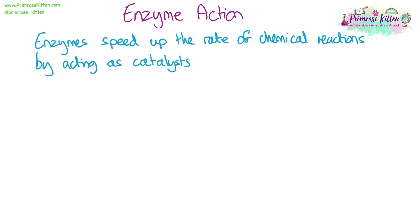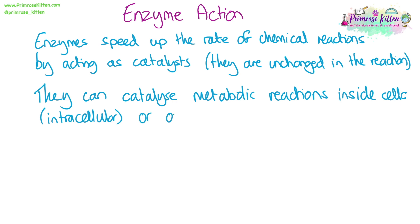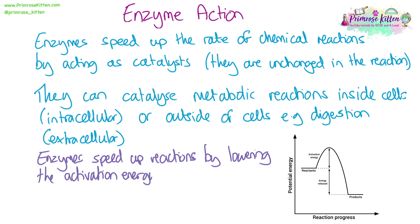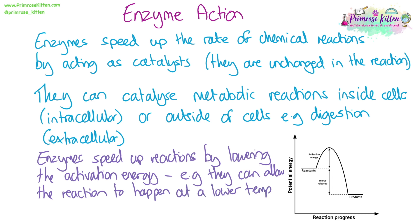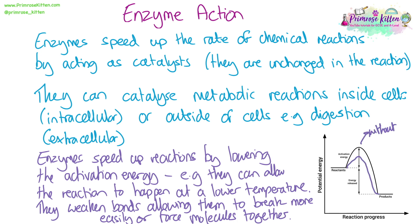Enzymes speed up the rate of chemical reactions by acting as biological catalysts. This means they are unchanged and they do not get used up in the reaction. They can catalyse metabolic reactions — for example, things like respiration inside cells — or they can work outside of cells. For example, in digestion, they work in the lumen of the small intestine; this is known as extracellular. Enzymes function as catalysts and speed up reactions by lowering the activation energy required for a reaction to take place. For example, they can allow a reaction to happen at a lower temperature than without the enzyme. If they're breaking down a molecule, they can weaken the bonds, which allows them to be broken more easily. Or if they're making a molecule, they can force molecules that would normally repel each other together, to make sure they react together faster.